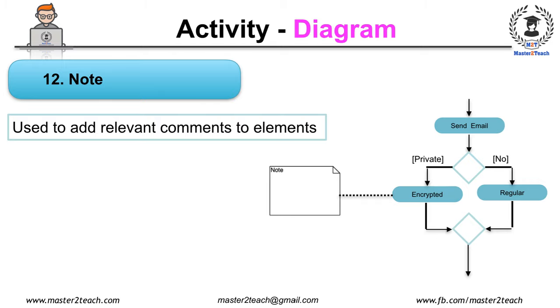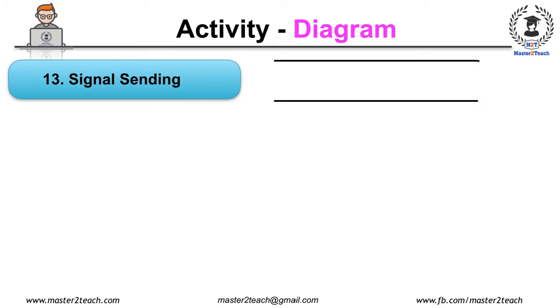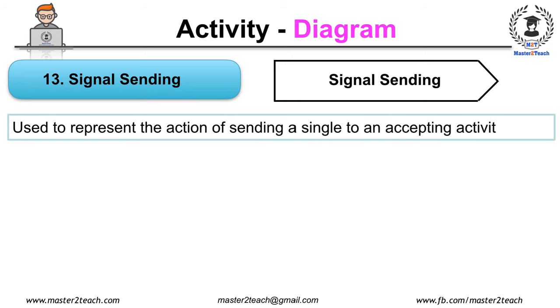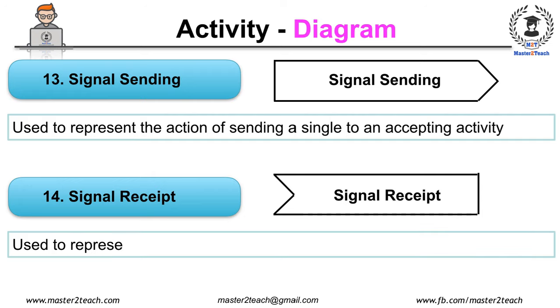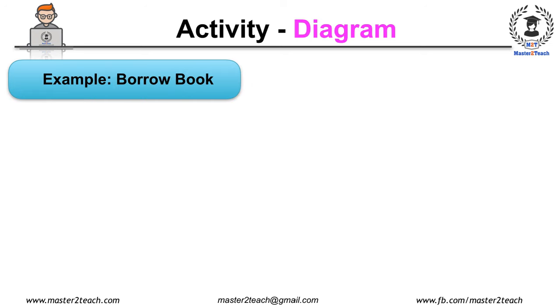Besides this notation, there are also available another notation like signal sending, which is used to represent the action of sending a signal to an accepting activity, and signal receipt, which is used to represent that signal is received. Let's see an example of borrowing book in the library system.